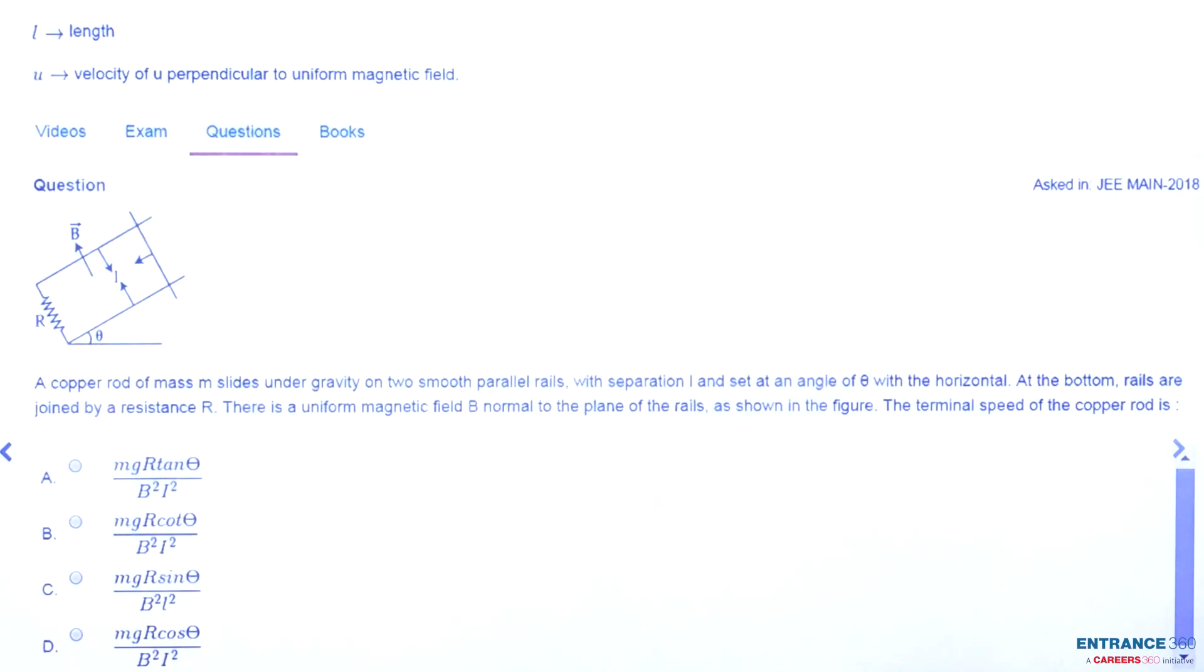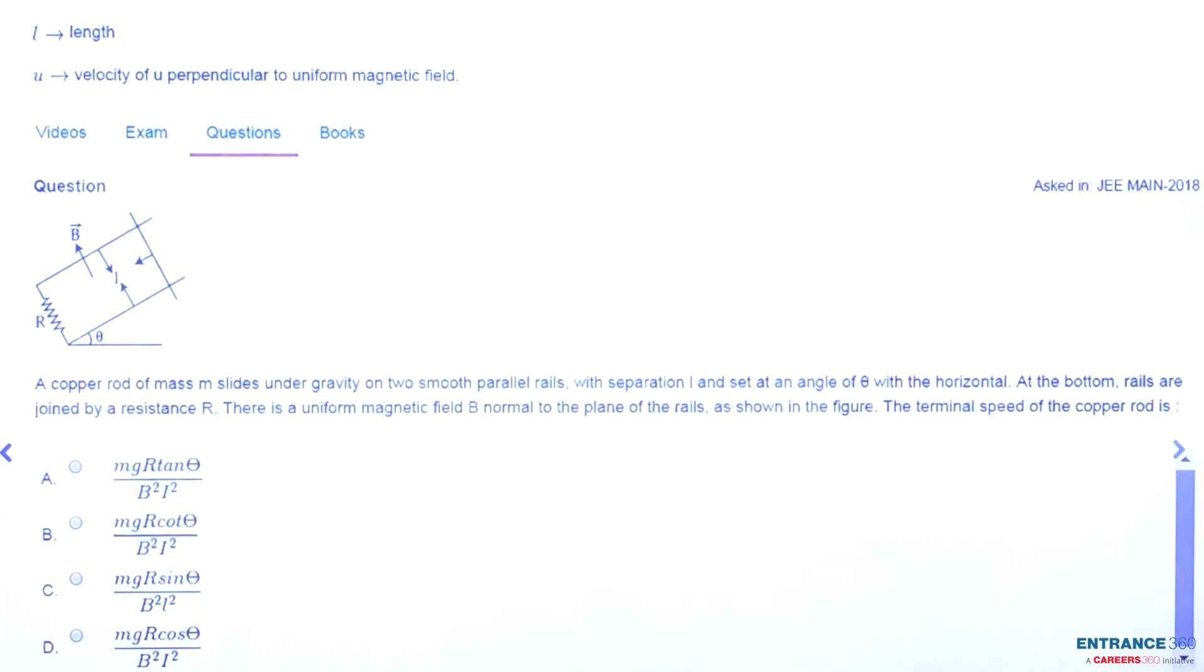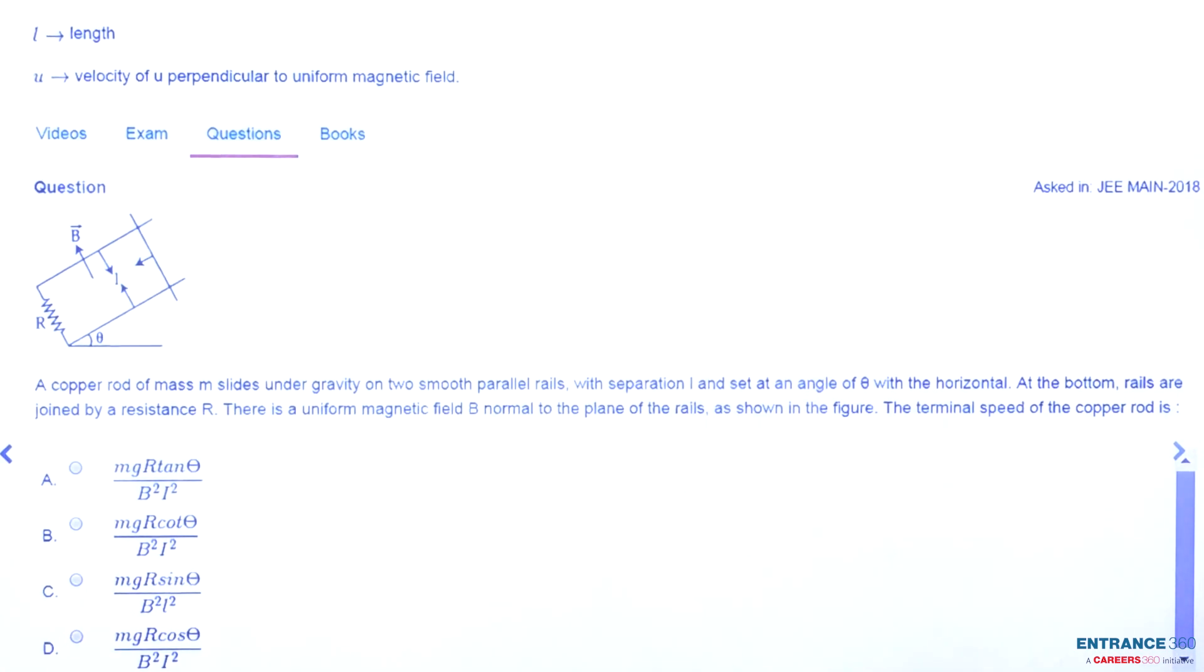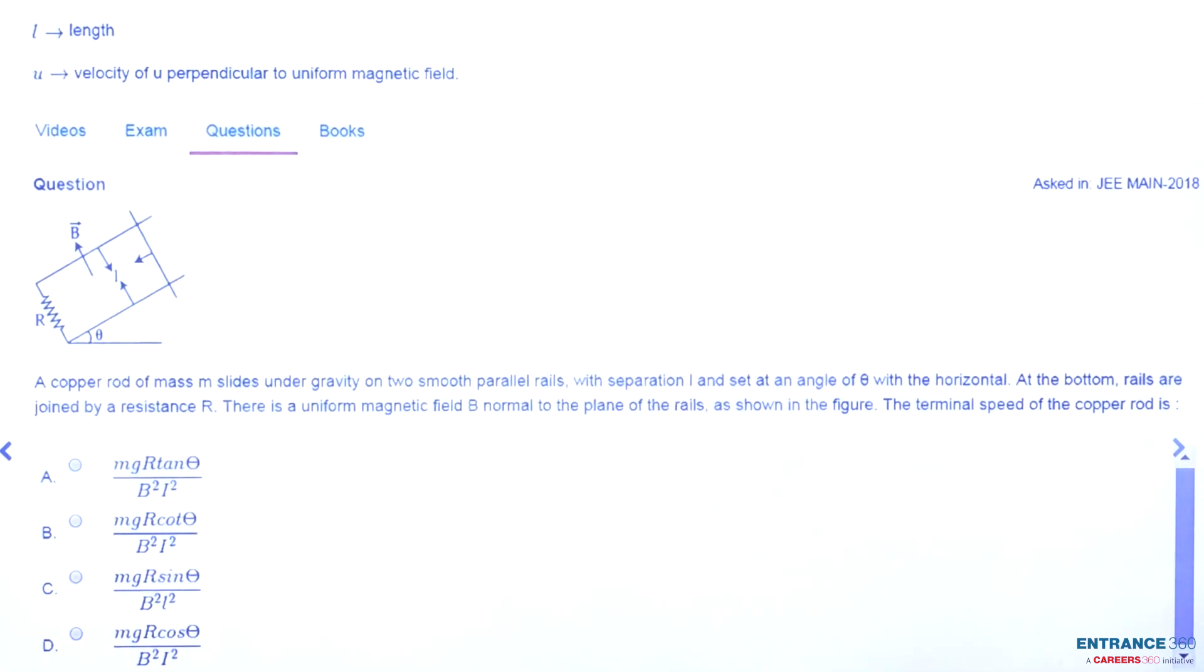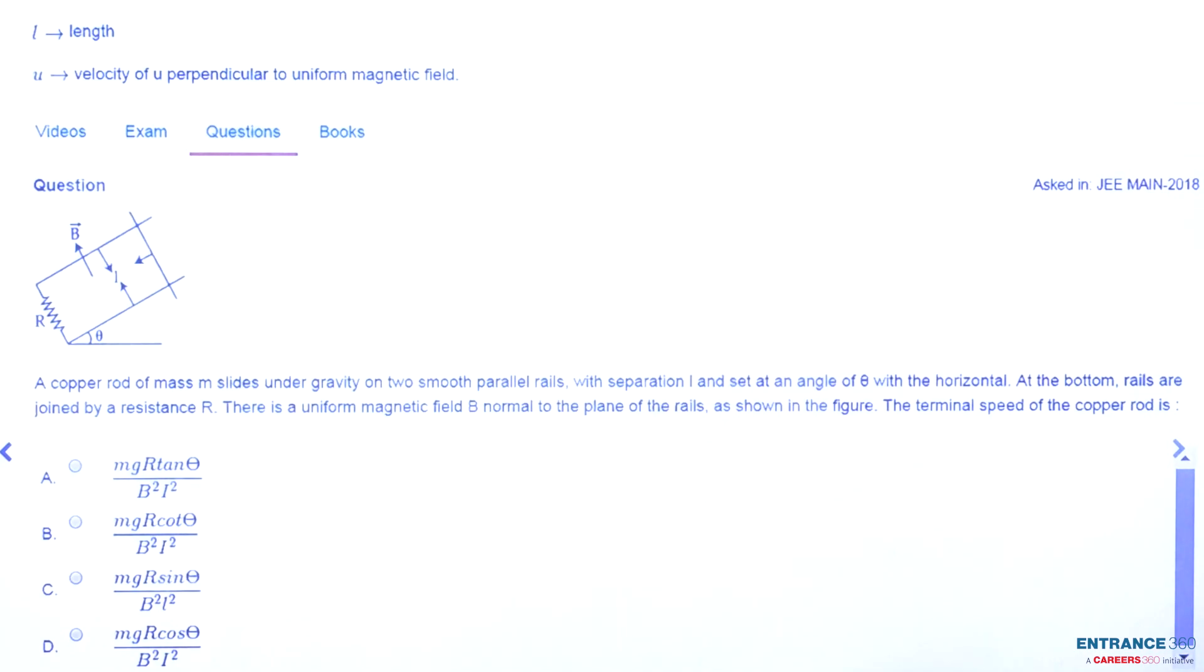The question says a copper rod of mass m slides under gravity on two smooth parallel rails separated by L and set at an angle theta with the horizontal. The bottom of the rails is joined by a resistance R, and there is a uniform magnetic field normal to the plane of the rails as shown in the figure.